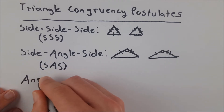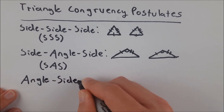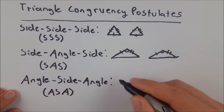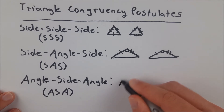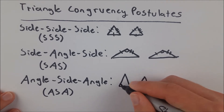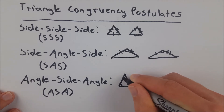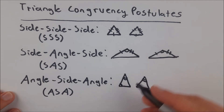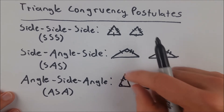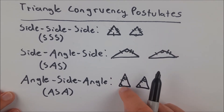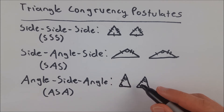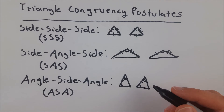Then we have a similar one, sort of in reverse, which is the angle-side-angle congruency postulate, commonly written as ASA. The angle-side-angle postulate says what you might expect. Let's say we've got two triangles — it says that if we have two angles that are congruent between triangles, let's say this angle is congruent to this one and this one's congruent to this one, and their included side is congruent — that's the side between the two angles — then those triangles are congruent.